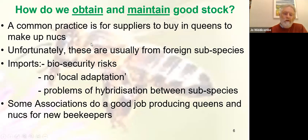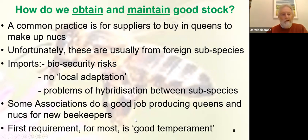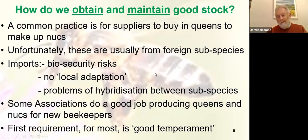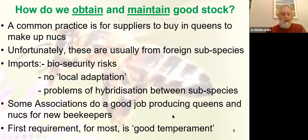Some associations do a good job producing queens and nukes for new beekeepers, and that's highly recommended because they breed from the ones that are doing well in their area — that's a really good start. The first requirement for most people is good temperament, and locally bred bees are often good-tempered. But when bees bought from abroad cross with local bees it's another story, and the good temper doesn't often last for more than a couple of generations.